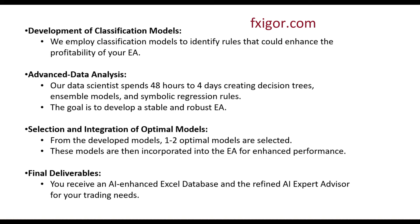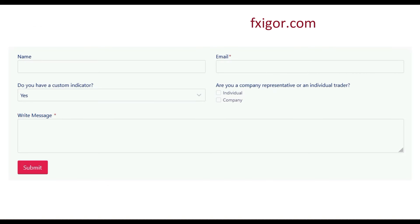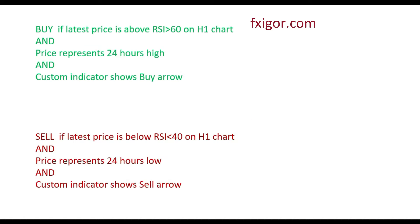Let me walk through that step by step with screenshots. First, you visit our FXseeker.com website, enter your name and email, write us a message, and we will start. The most important part is that you have a buy and sell rule. For example: buy if the latest price is above this indicator and the price is above the 24-hour high, and this custom indicator is like this. Two or three basic rules that you use in manual trading are enough.